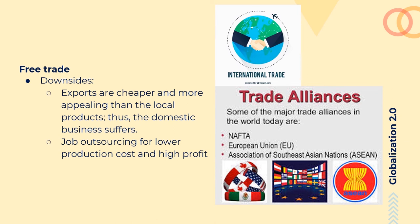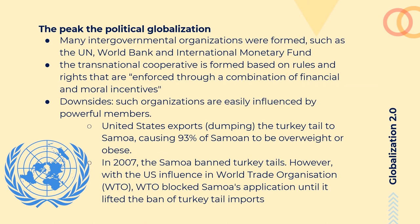Globalization 2.0 was also when the rise of political globalization reached its peak. Many intergovernmental organizations were formed, such as the United Nations, World Bank, and World Trade Organization. Under these organizations, transnational cooperation is formed based on rules and rights enforced through a combination of financial and moral incentive. However, intergovernmental organizations can be exploited as well.